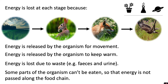Some parts of the organism can't be eaten, so that energy is not passed along the food chain. For example, the fox might not eat all of the fur of the rabbit, and therefore that energy stored in the fur cannot be moved up the food chain. Similarly, the eagle might leave parts of the fox's fur or might not be able to eat some of the larger bones, so that energy stored in the fur and bones can't be passed up the food chain.